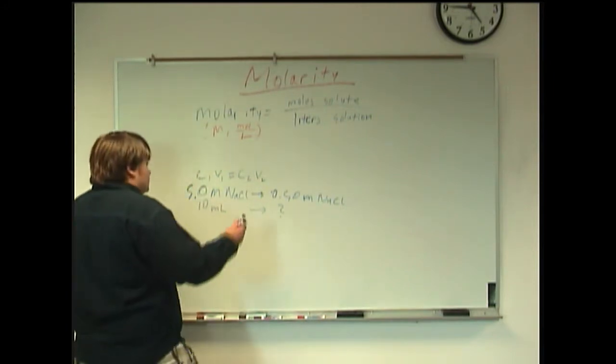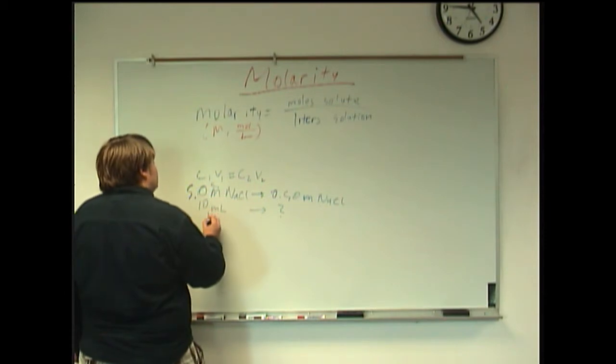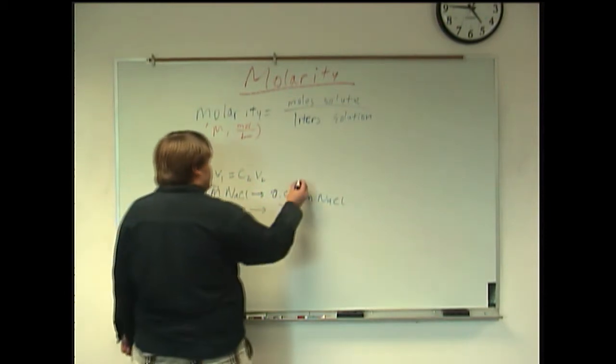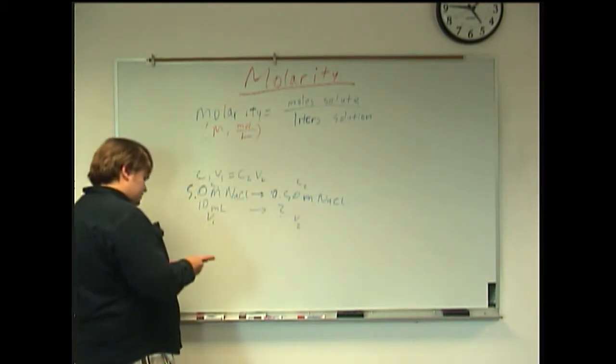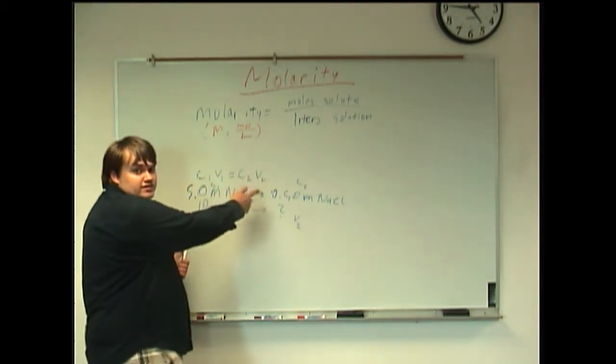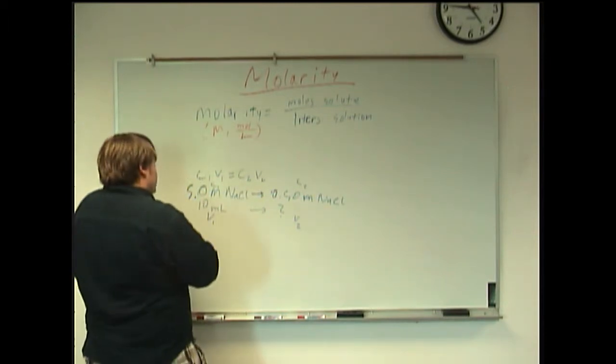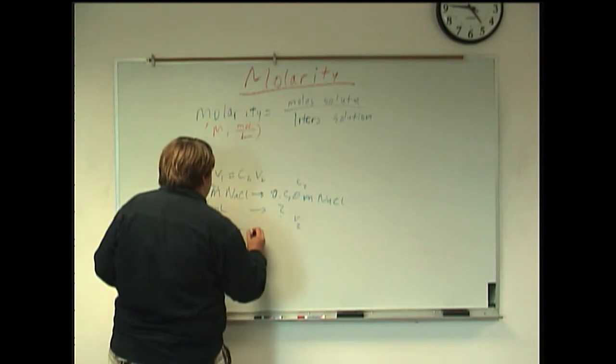Since this is C1, this is V1, and then this is C2, V2 is what we're looking for. In this case, we want to get V2 by itself in this equation. And so, V2 is going to equal C1 V1 over C2.